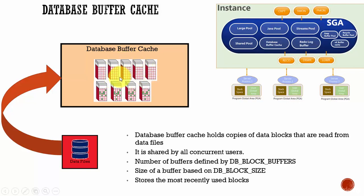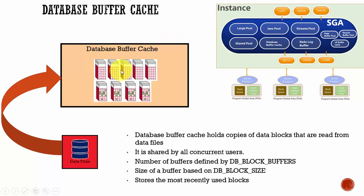All the concurrent users can share these data blocks. For the first time when an Oracle database user requires a particular piece of data, it first searches the database buffer cache. If it finds the data here, then it returns the data to the user. If it finds the data in the database buffer cache, then it's called a cache hit.